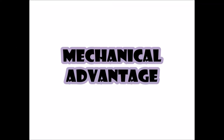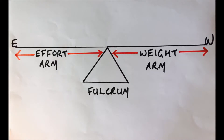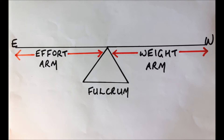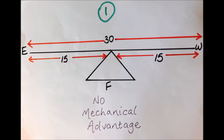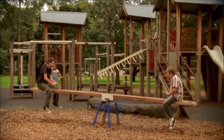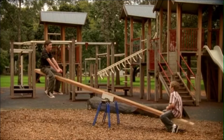Regarding mechanical advantage in a first class lever, there are two distances considered in relation to the fulcrum. The distance from the fulcrum to the effort is called the effort arm, and the distance from the fulcrum to the weight is called the weight arm. When the weight arm and effort arm are equal in length, there is no mechanical advantage, because the effort required to lift the weight is of the same magnitude as the weight itself.